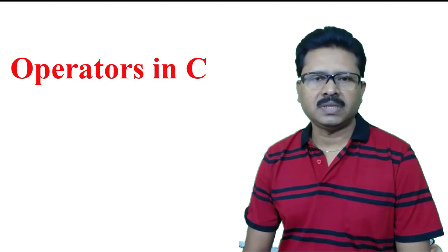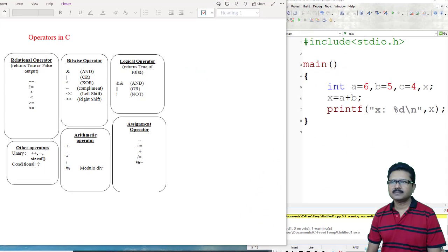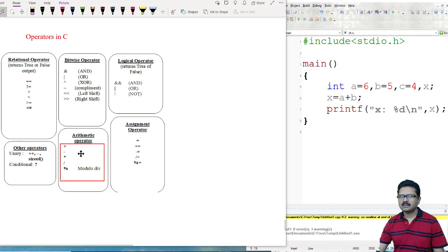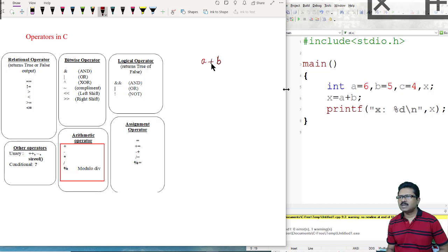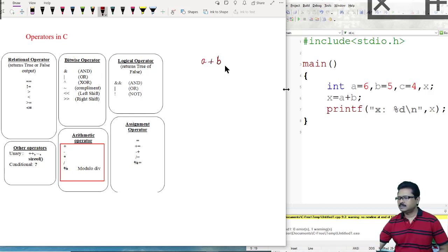First I am explaining arithmetic operators. Examples of arithmetic operators are addition, subtraction, multiplication, division, and modulo. For these operations there must be at least two operands. For example, for addition A plus B, the plus symbol is the addition operator and A and B are the two operands. This addition operation will add the value of A and value of B.